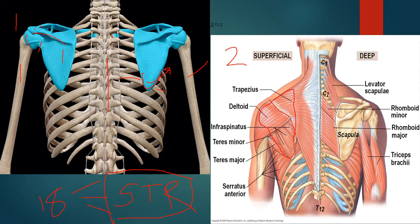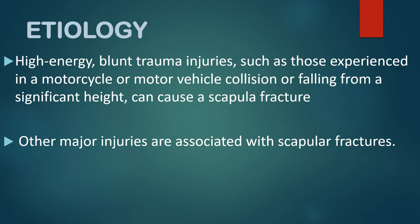Regarding etiology, high-energy blunt trauma — such as motorcycle or motor vehicle collisions, or falling from a significant height — can cause a scapular fracture. These are all high-impact, high-energy traumas. Because the scapula is covered by 18 muscles, you need very high energy to actually get a scapular fracture.